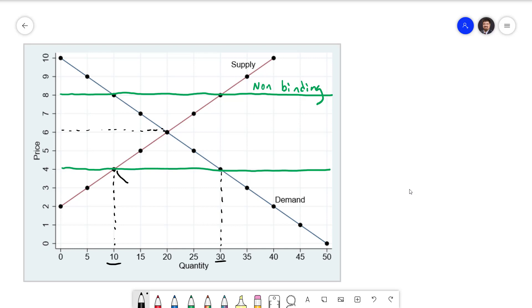There's more people who want to buy than there is available quantity supplied. The difference in the two is the size of the shortage. In our case, the shortage is 20 units, 30 minus 10.